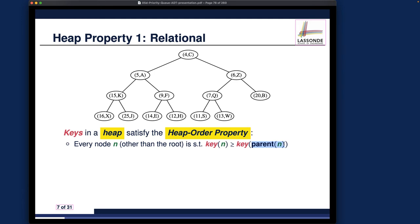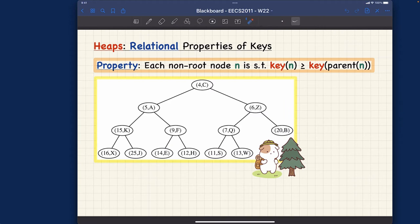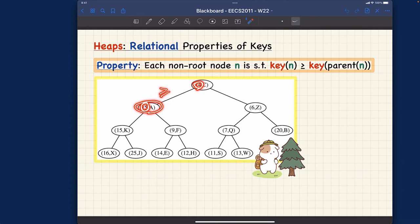We want to check this property for every node — similar to checking whether a tree is balanced. In order for a tree to be a heap, every node that's not the root must satisfy the heap order property. Let's check node by node on the example. Every non-root node — we skip the root since it has no parent — must have its key larger than or equal to its parent's key.